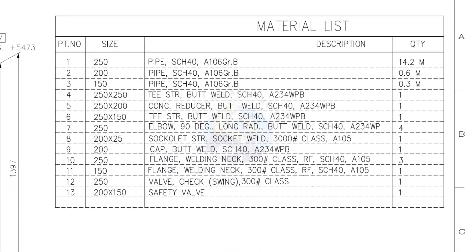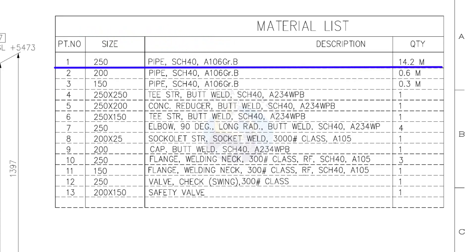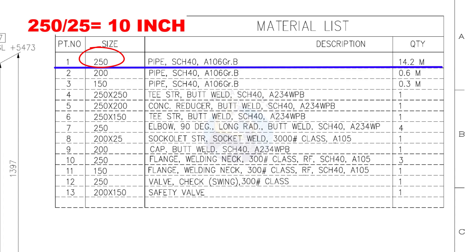Let us start with the material list. Part number 1: pipe nominal size is 250. If you want to convert this into inches, divide it by 25 and you will get the nominal pipe size in inches. What is the nominal pipe size of this 250 NB pipe in inches? Divide 250 by 25. The answer is 10 inches.